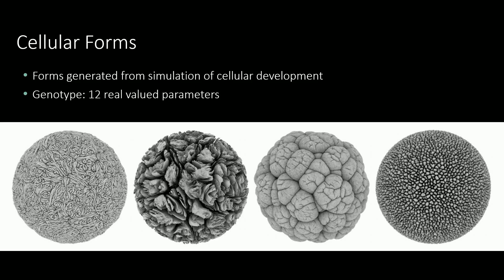Some relevant background to this work is that I'm a practising computational artist. Most of my work explores morphogenesis, modelling growth as a process of cellular development, and exploring the range of complex organic forms that can be created through these systems. For this study we focused on a series of works from around six years ago called Cellular Forms, because it already had a dataset including rankings and categorisations that we thought would be particularly relevant. The model used has a genotype of 12 real-value parameters and can produce quite a wide range of different structures.